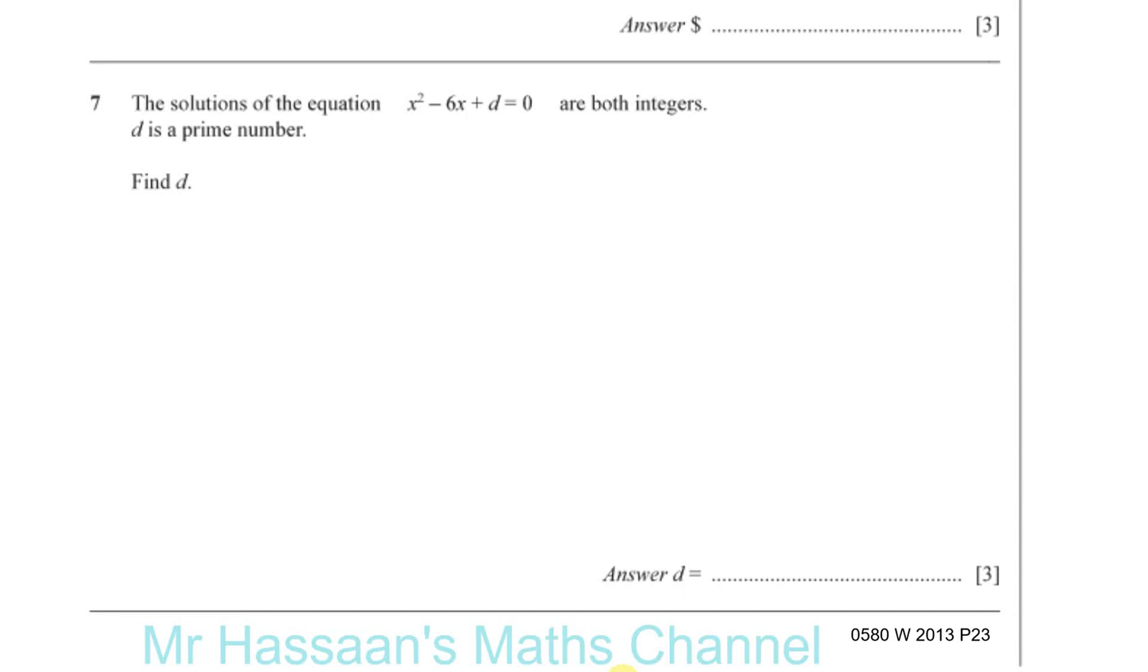We have here a request for me to answer question number 7 from November 2013, paper 2, variant 3. In this question we're told that the solutions of the equation x squared minus 6x plus d equals 0 are both integers, and d is a prime number. Find d.